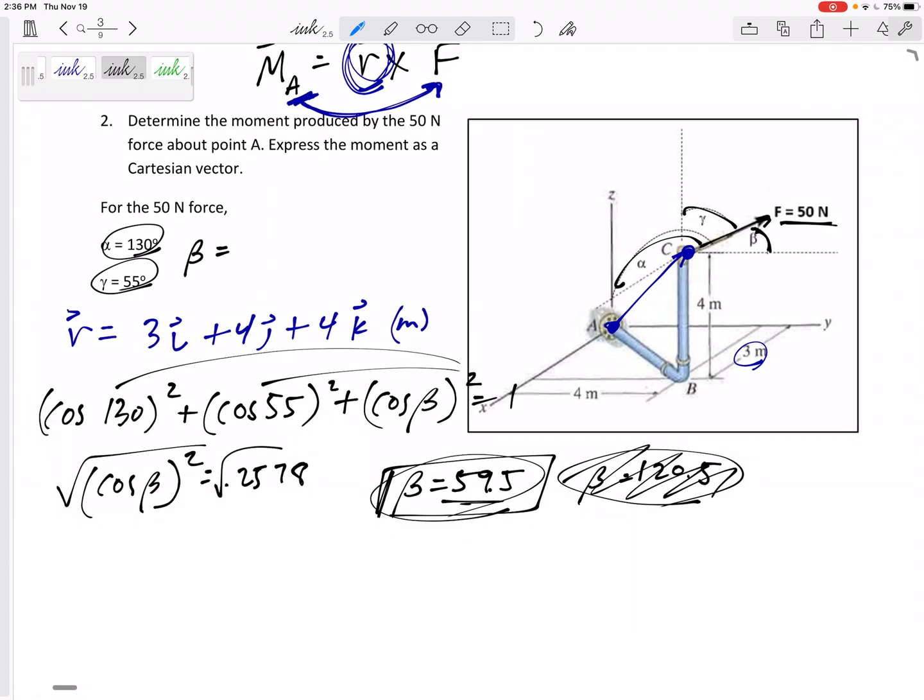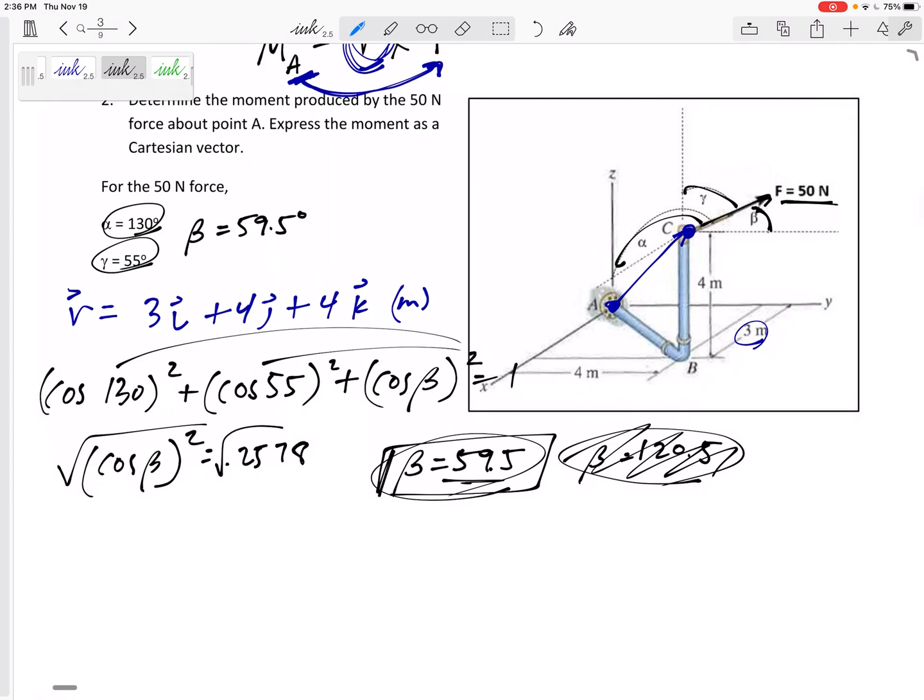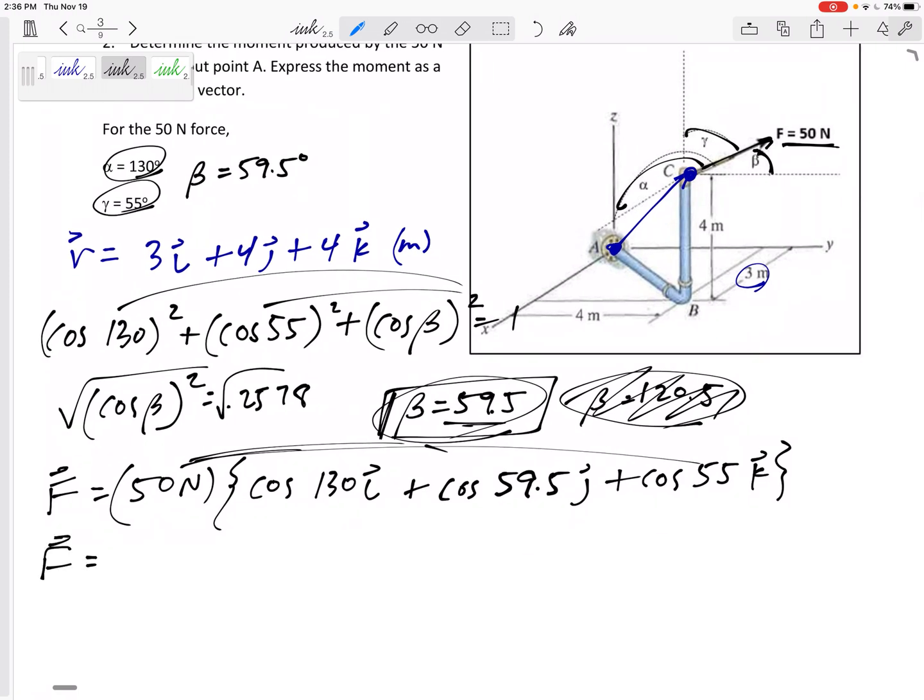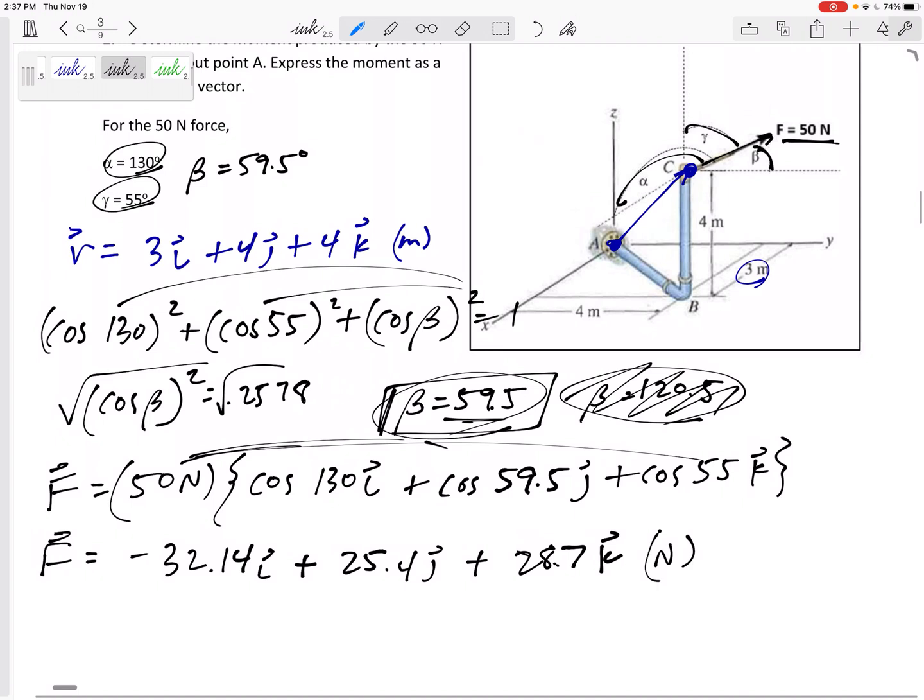Alright. So now that I know that third angle, beta 59.5 degrees, then, these are quarter direction angles. What do I do for quarter direction angles? F equals FU, where U is cosine alpha i plus cosine beta j plus cosine gamma k. So this force would be the magnitude 50 newtons times cosine of 130 in the i, right? That's it. It's quarter direction angle. It's alpha. It's 130 from the X axis, cosine of 59.5 to the J axis and cosine of 55 to the K axis. Multiply that through and let's get F in its component form. Alright. I've got negative 32.14 in the i plus 25.4 in the j plus 28.7 in the k.